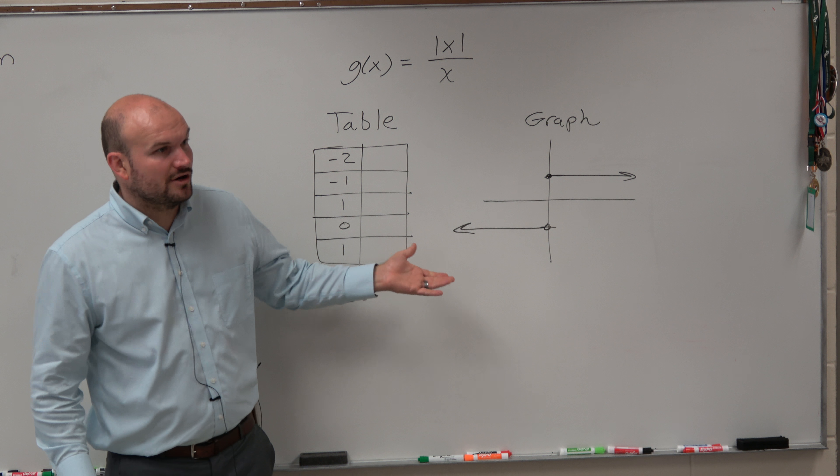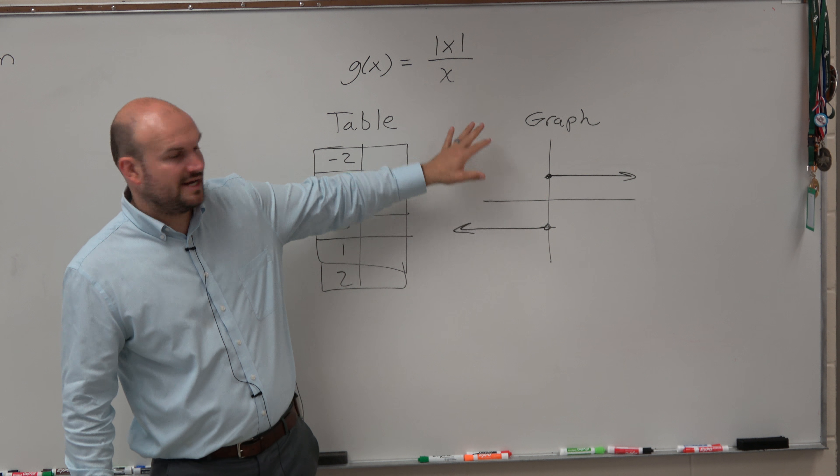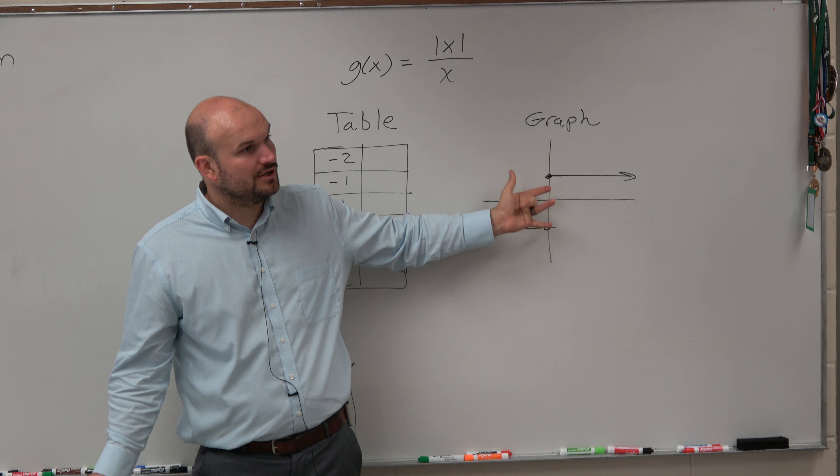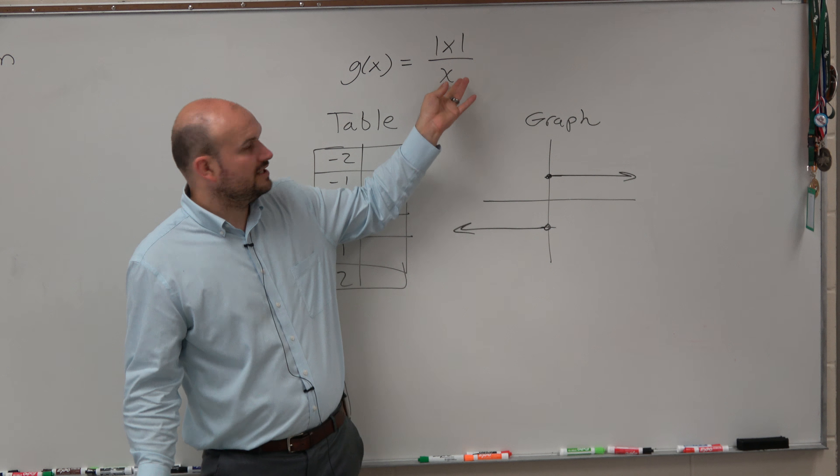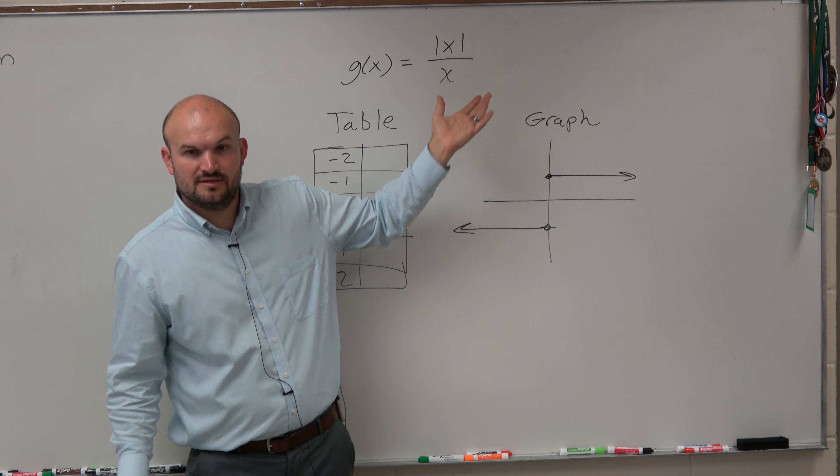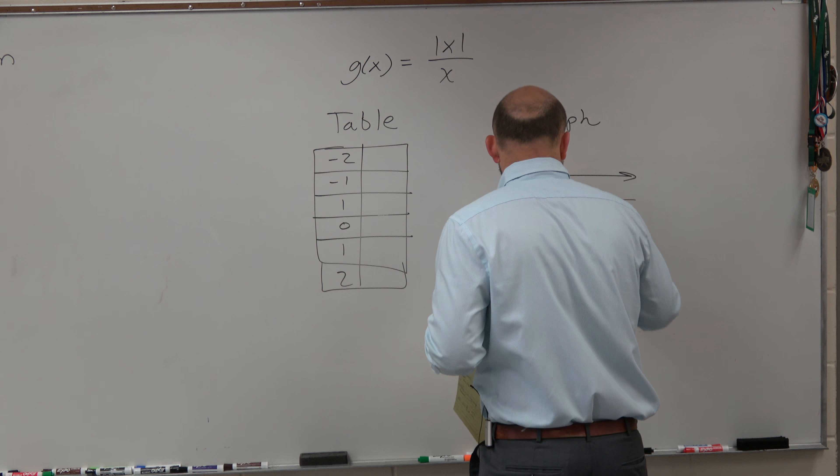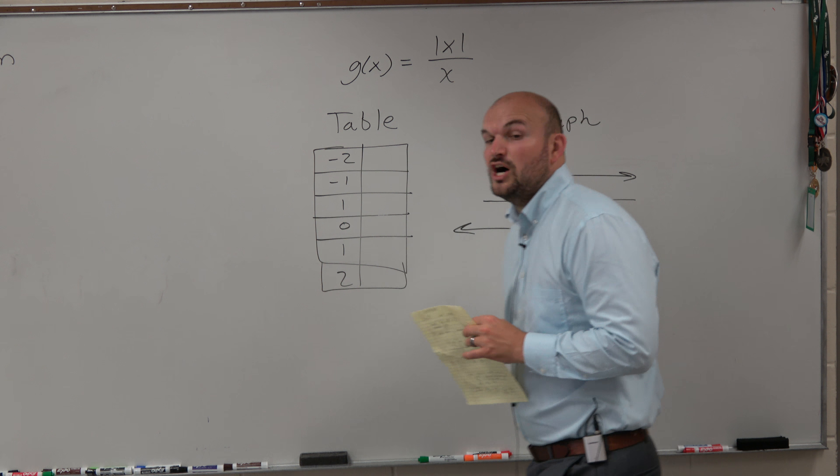You guys are going to have a graph that's going to look something like this. Now, obviously, at 0, it can't equal 0. So these are going to be open circles because you can't actually equal 0. Because if you had x equals 0, then it would be undefined. So these are both undefined at 0.